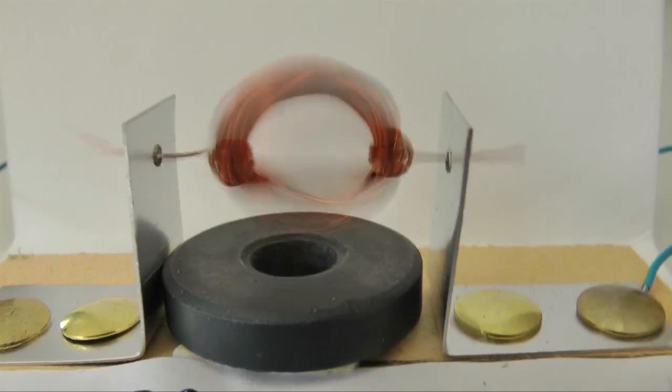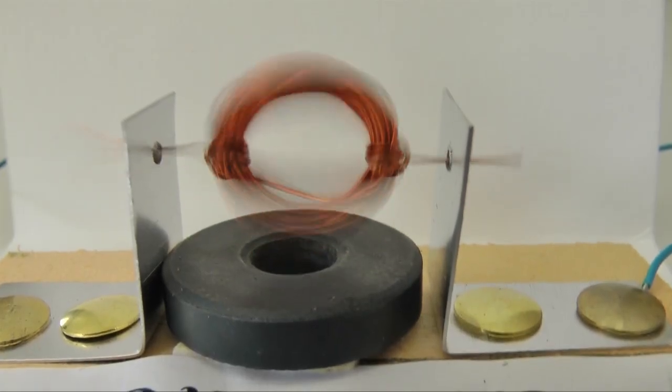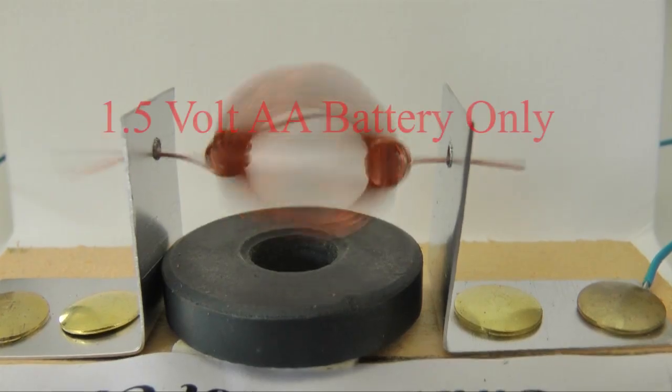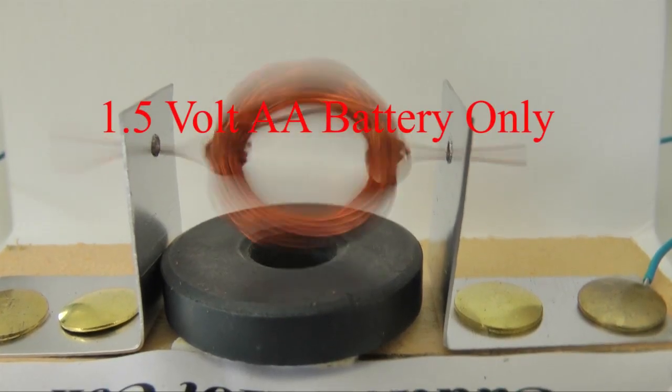A safety reminder. If you attempt to construct this electric motor, do not use any power source other than a single 1.5 volt AA alkaline battery.